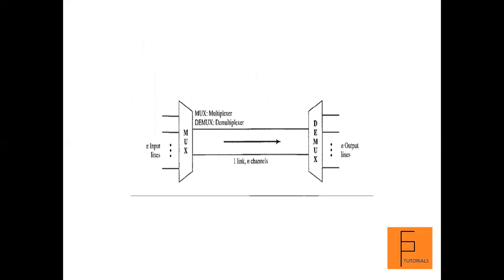The word 'link' refers to the physical path. In the figure, there is one link divided into n number of logical channels. The word 'channel' refers to a portion of a link that carries a transmission between a given pair of lines, and one link can have n channels. Each input line is allocated one channel, and using that channel, transmission from a particular input line goes to the particular output line.